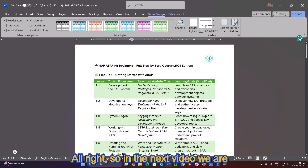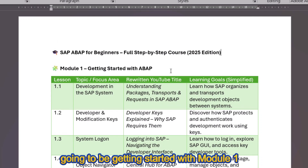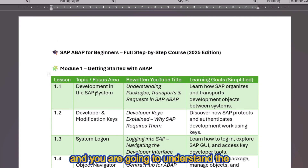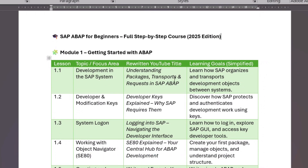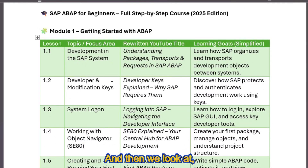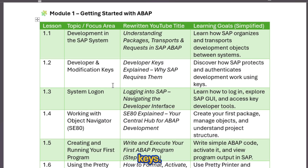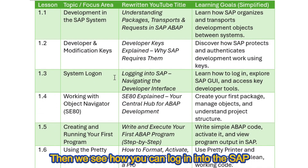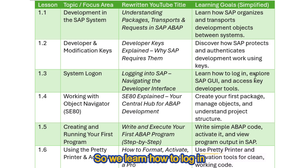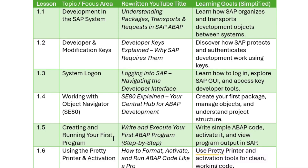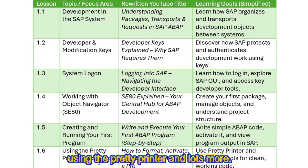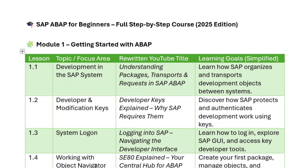In the next video we get started with Module 1. You'll understand development in the SAP system — what packages, transports, and requests are — and then we look at developer keys. We'll see how to log in to the SAP system, work with the Object Navigator, create our first program, use the Pretty Printer, and much more.